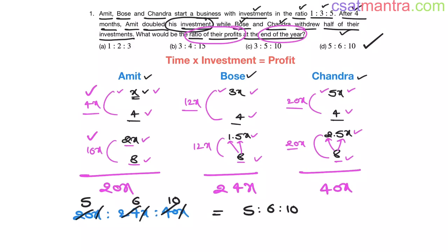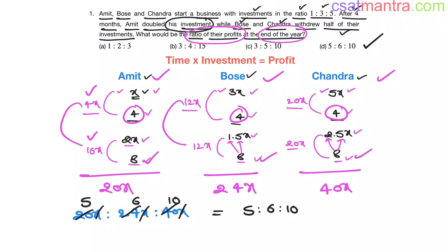Just calculate the profits for each duration and add those profits. For the first 4 months, I calculated the profits for Amit, Bose and Chandra, and for the next 8 months I calculated their profits and added them. This is what you have to do — time into investment equals profit. Like this, you can solve any problem from partnerships.